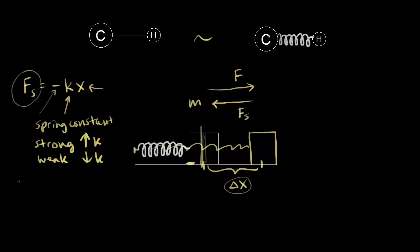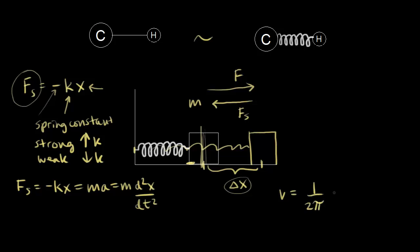Getting into the physics: you can set this equal to mass times acceleration, because F = -kx = ma, and the acceleration is the second derivative of the position. Eventually you can solve for the frequency of oscillation for this spring-mass system, and when you do that math, you get the frequency of oscillation equal to one over two pi times the square root of k over m.